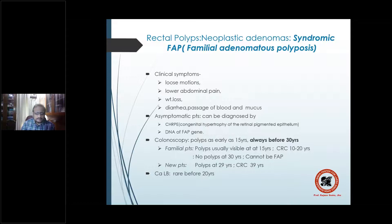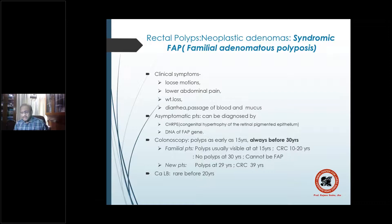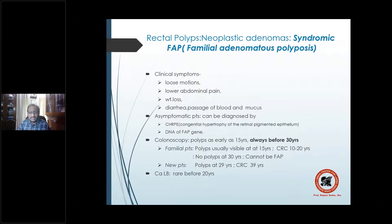Asymptomatic patients can be diagnosed using FAP gene testing or CHRPE gene identification. Colonoscopically, in suspected offspring of a parent with FAP, polyps are found as early as 15 years, but always before 30 years. Surveillance must be carried out in suspected offspring up to 30 years of age.